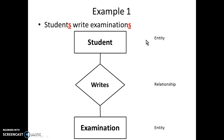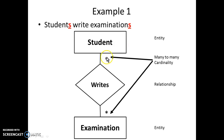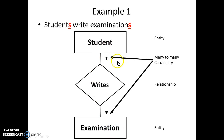To represent this plural form, we can use cardinality. The mapping cardinalities can be shown as many-to-many cardinality. The star represents the many side: many students are associated with many examinations, meaning a student writes many examinations and an examination is written by many students. That is how cardinality represents the plural form of the statement.